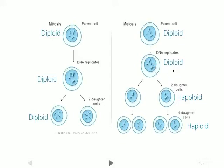Then it's going to go through meiosis I. When it comes out of meiosis I, you're going to have two cells produced, which each have half the number of chromosomes as the parent cell. We have one, two here — and that's half of four, which is what we had to begin with. So because these have half a set of chromosomes, we call them haploid cells.